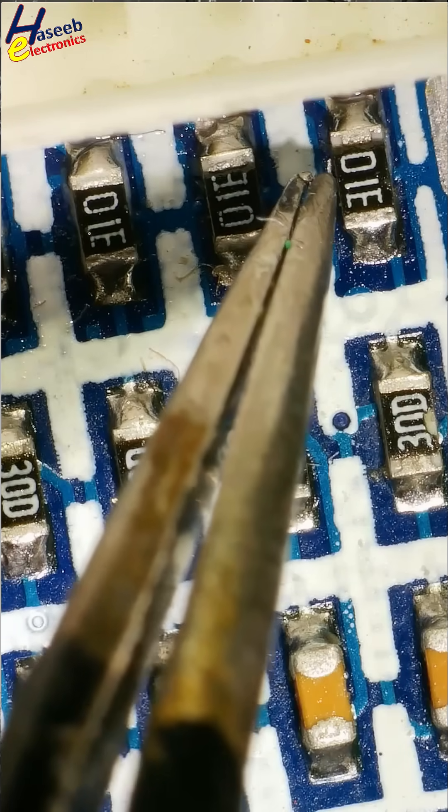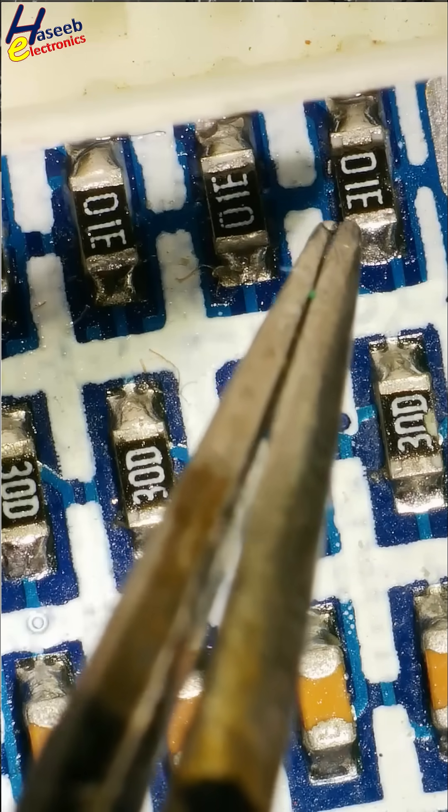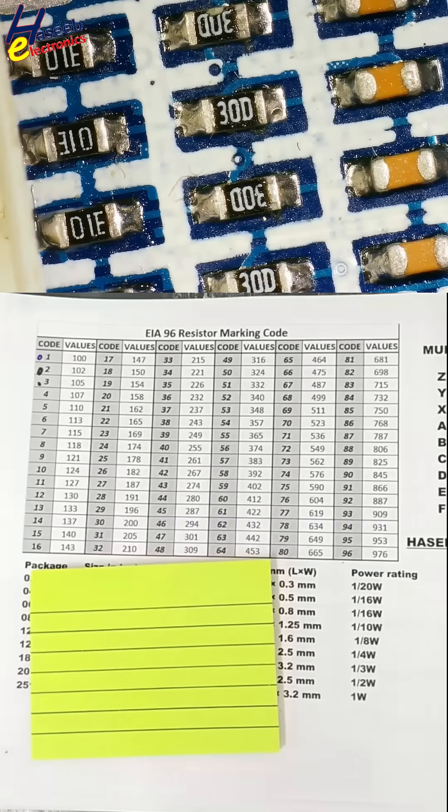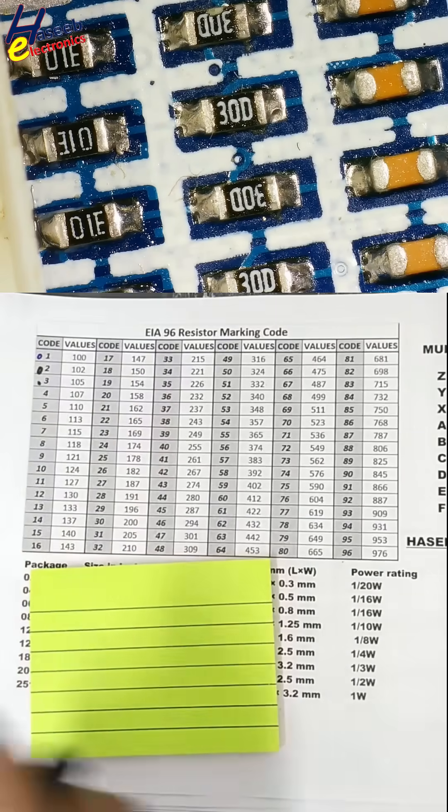It is combination of two codes. Two digits, one alphabet. EIA96 or E96 code.